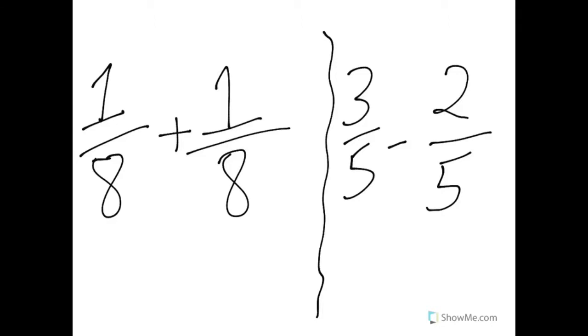When we're adding or subtracting fractions, if you look at this addition problem 1/8 plus 1/8, the denominators are the same, so the denominator stays the same. I don't add 8 plus 8, it just stays 8. I only have to add the numerators if the denominators are the same. 1 plus 1 is 2, I get 2/8.